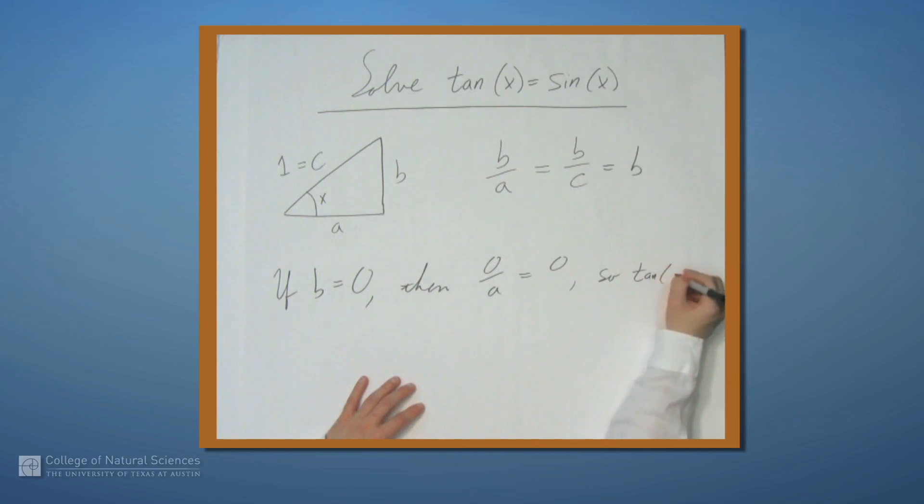So tangent of 0 equals sine of 0. And well, we already knew that sine of 0 is 0 and tangent of 0 is 0. So that's the case where b equals 0.